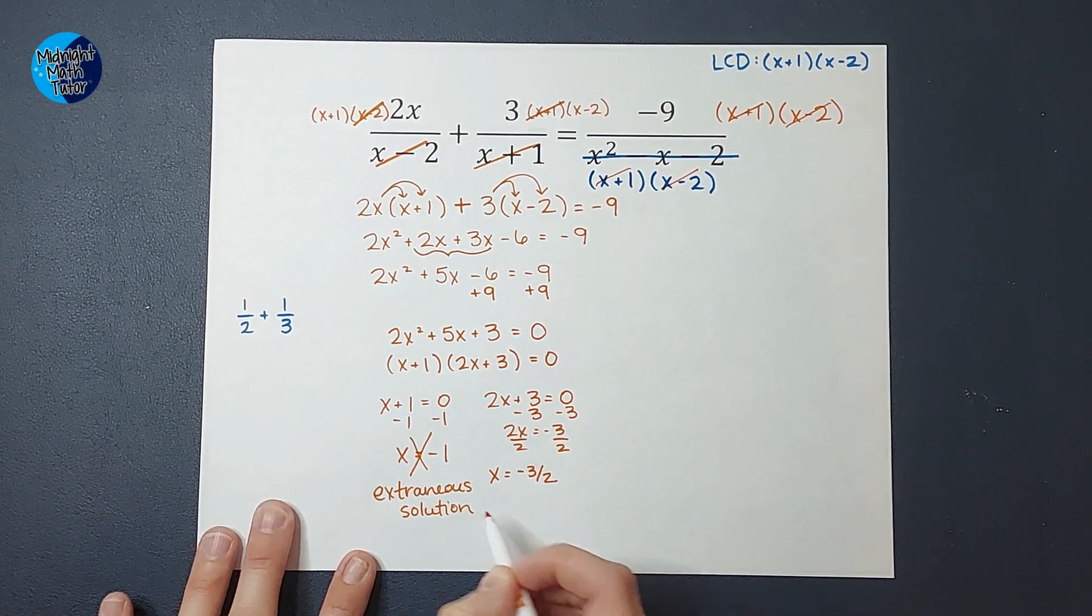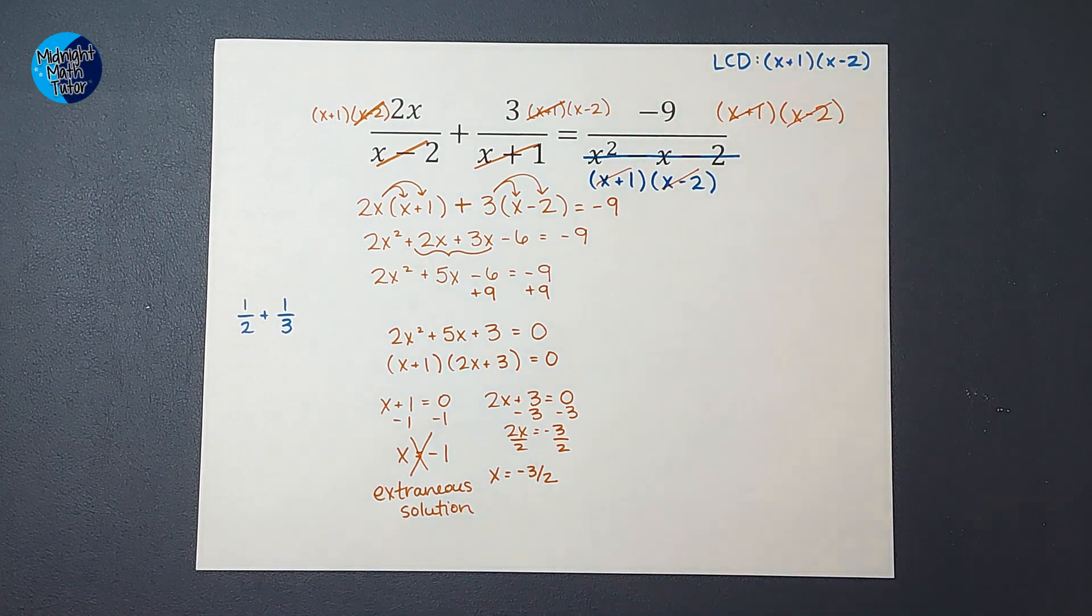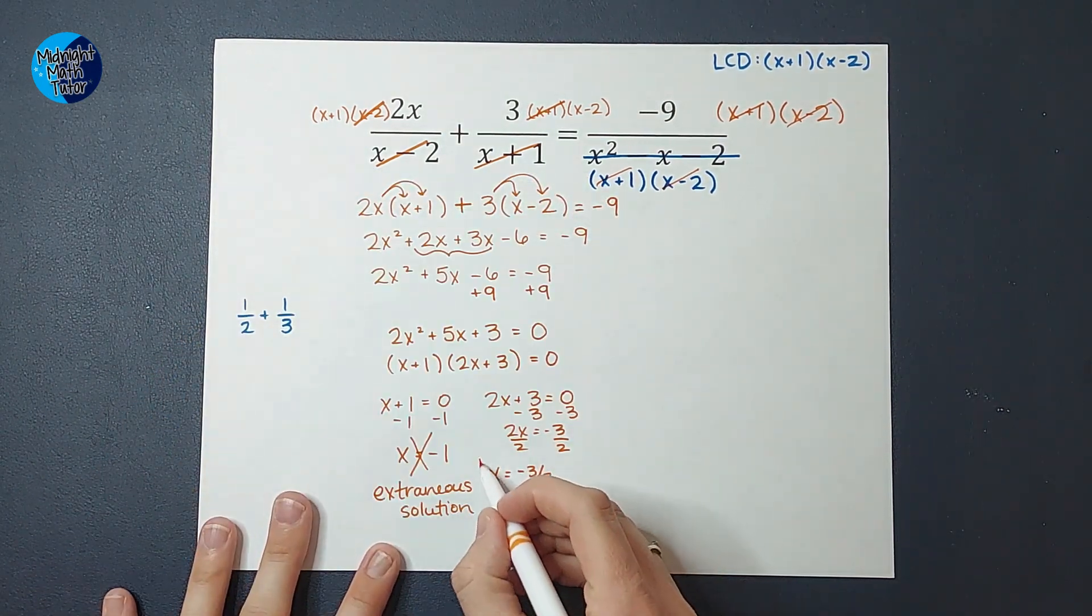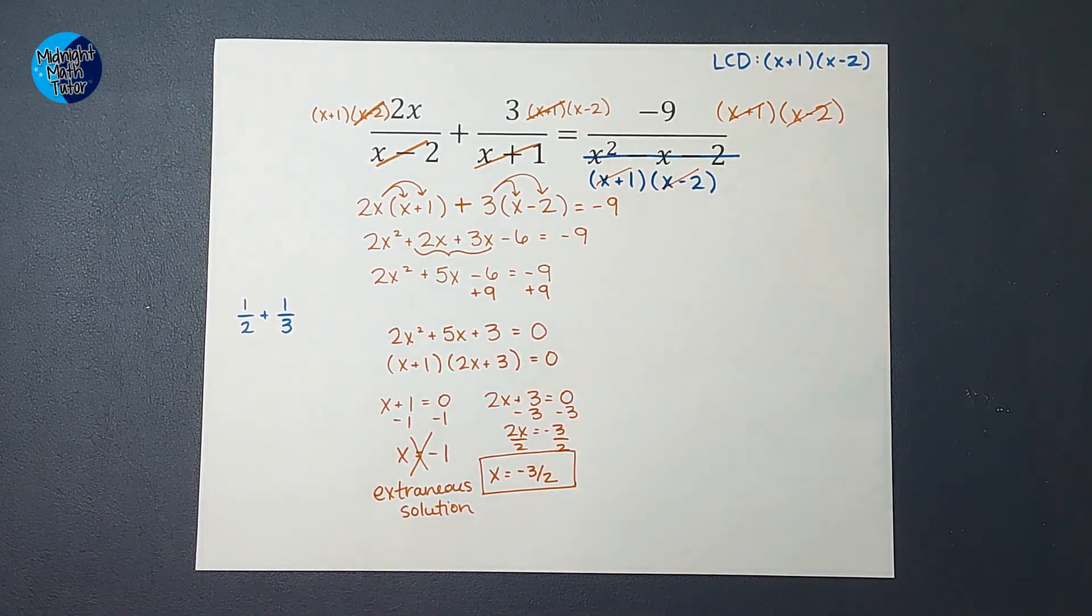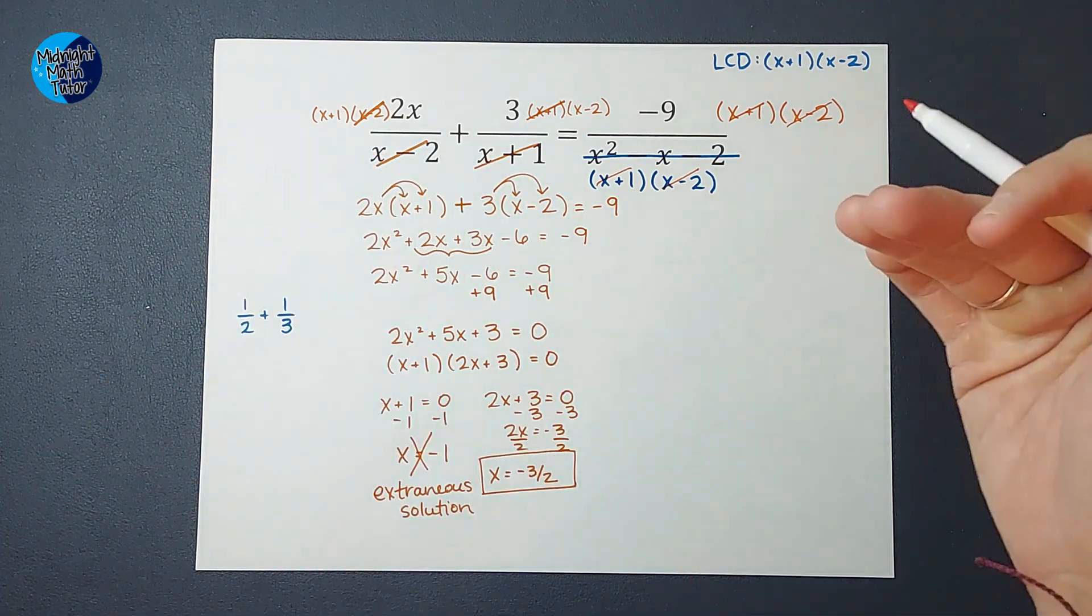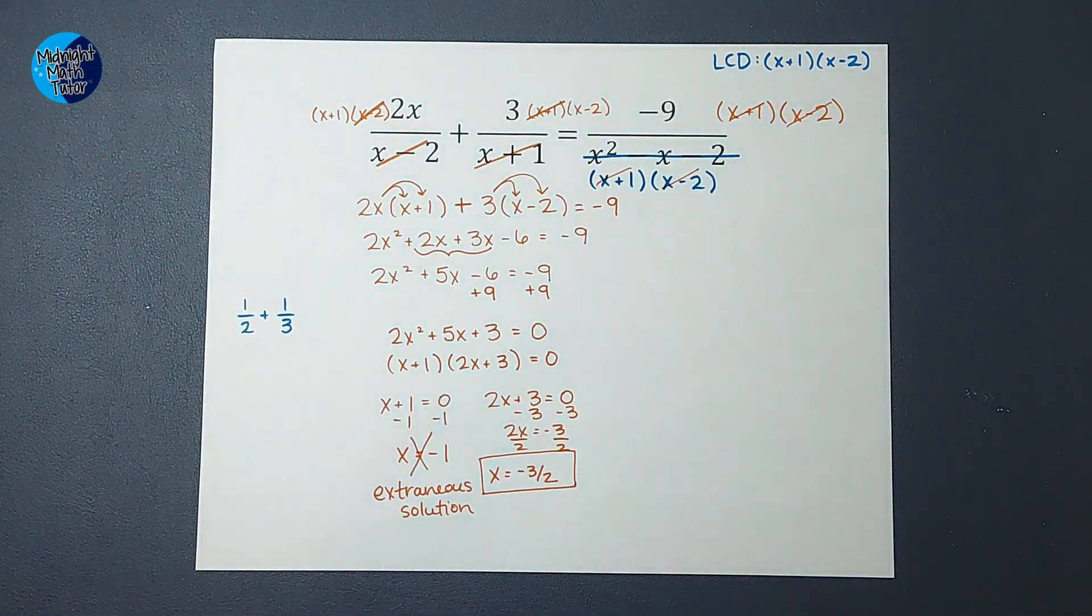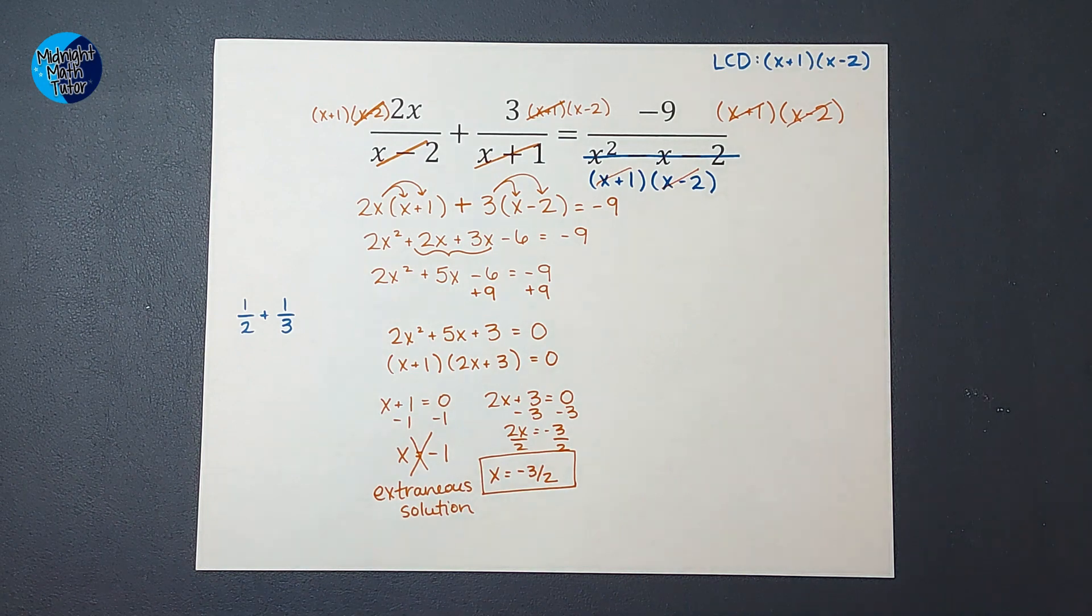So if I turned it into my teacher with x equals negative 1 as one of my answers, guess what? I'm probably going to lose a couple points. So make sure you're checking for those extraneous solutions. Now, when I look here, negative 3 halves is good. So that would be my answer. There's kind of two methods for checking for extraneous solutions. You could have started by just setting each of these equal to 0 at the beginning and just noting, okay, if x equals either of those things, once I solve, it's an extraneous solution. Or you can go ahead and solve it like we did and then plug it back in whichever way you prefer. Hope this made sense. If you need some other examples, I will link a playlist for you. Thanks.